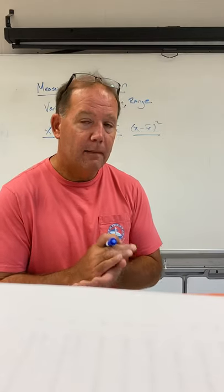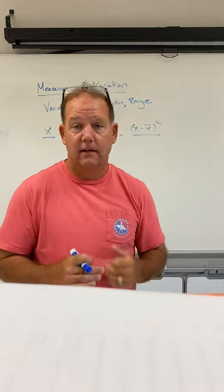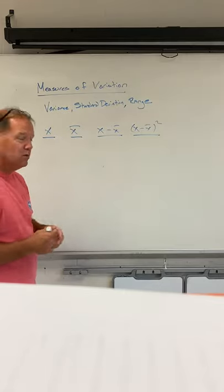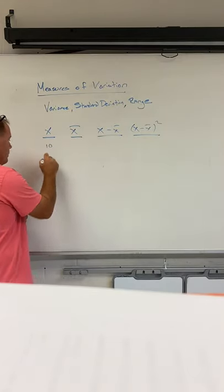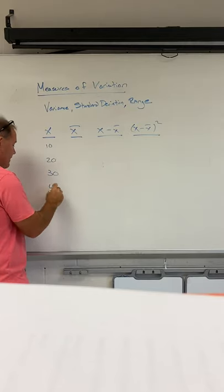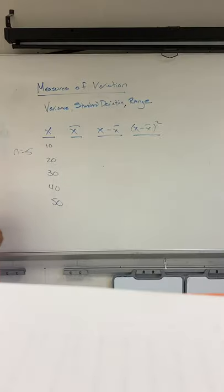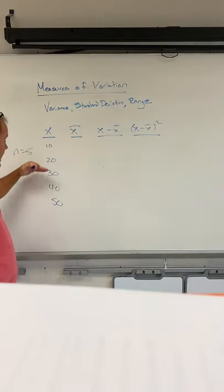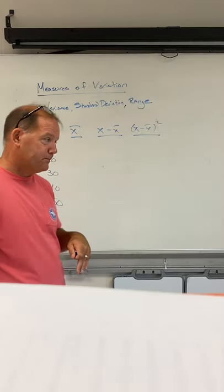When we talk about standard deviation, the first thing that we always have to be able to find is the mean. In the example that we're going to look at, which was one of your handouts, we had five data values. Our sample size was five. To put some context to this, we're saying this is the price of five paints: $10, $20, $30, $40 and $50 were the price of paint.